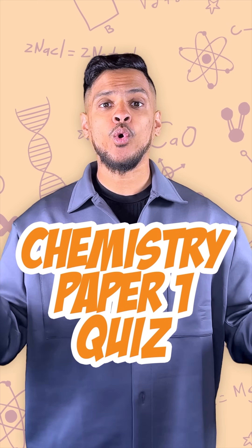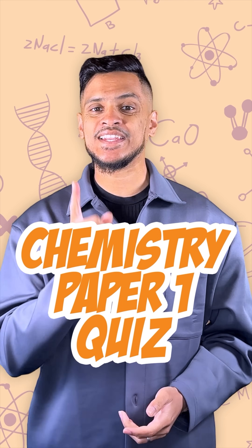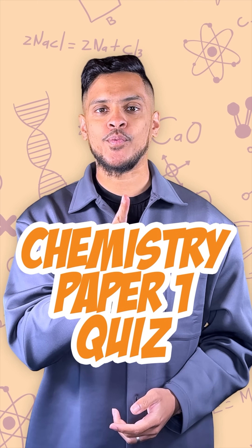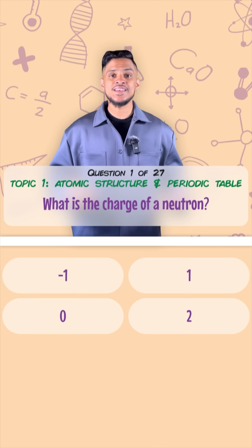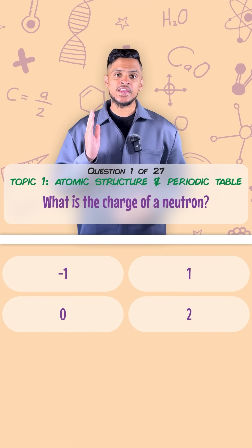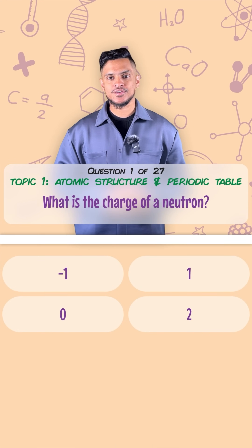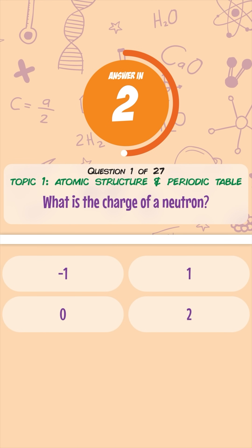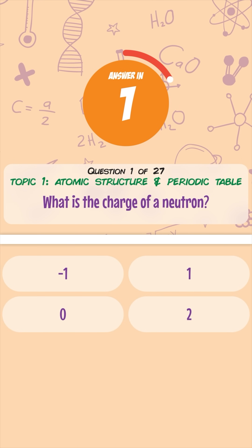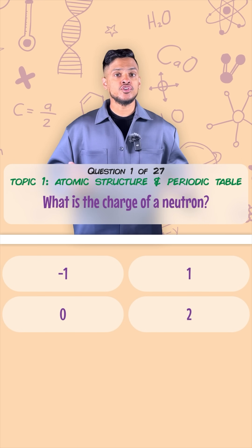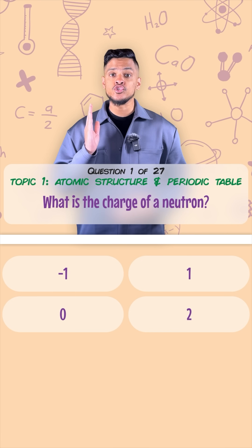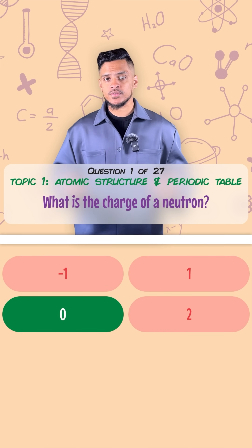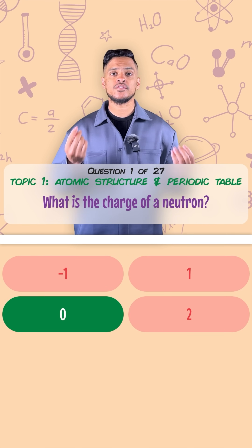Here's a quiz covering all the topics in chemistry paper one. What is the charge of a neutron? A neutron is neutral, which means it has a charge of zero.